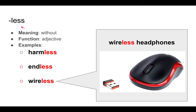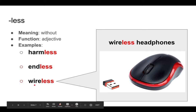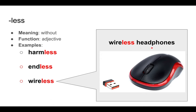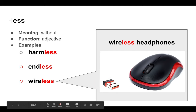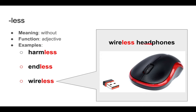Then we have -less, and it means 'without,' and it's an adjective. For example, we have harmless — without harm; endless — without end; and wireless — without a wire. Here's a good example: this is a wireless mouse. There's no wire. It uses Bluetooth technology. So, it's a wireless mouse, not a headphone.